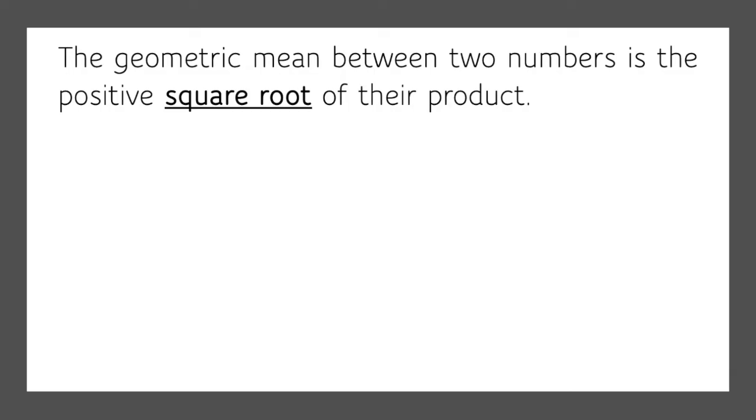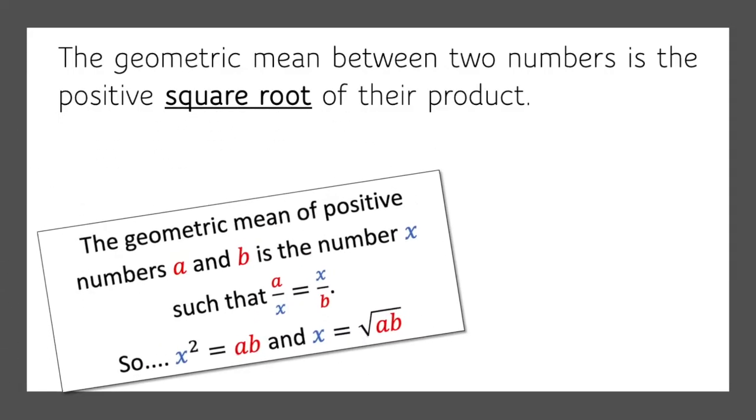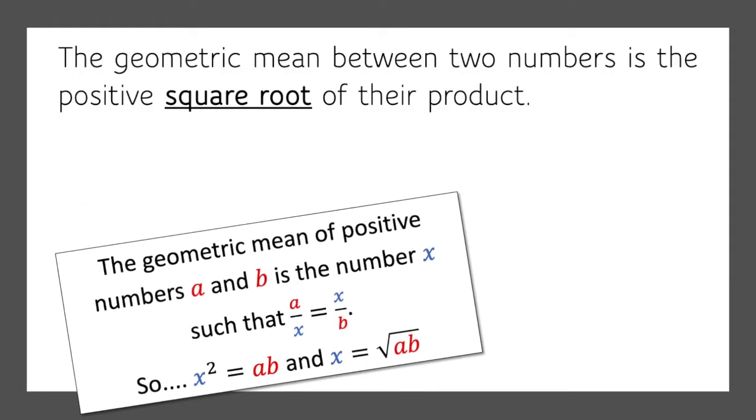The geometric mean between two numbers is the positive square root of their product. Mathematically it looks like this: the geometric mean of positive numbers a and b is the number x such that a over x equals x over b. So that means that x squared equals ab and x equals the square root of a times b.